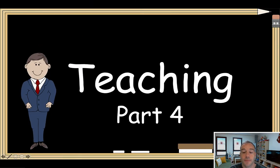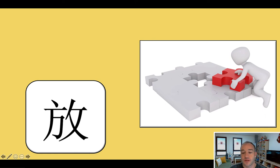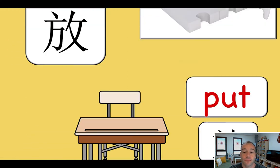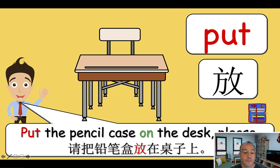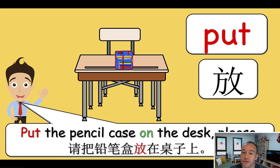Alright, let's go on to teaching part four. This is probably something new for most grade twos — the word "put." Put the pencil case on the desk, please. I want to make sure they use the word "please." So during class, if I don't say "please" they shouldn't do it — they should say "no, no, no" and then we say "please." So: "put the pencil case on the desk, please" — "sure, no problem." It's a command, and having that "please" element makes it fun.